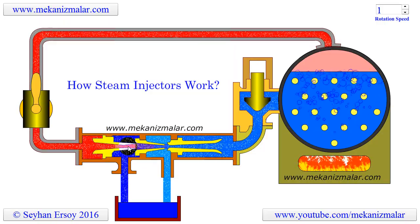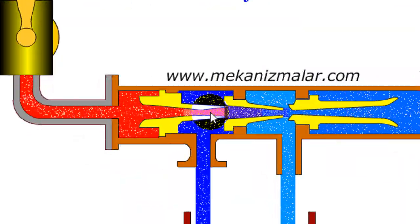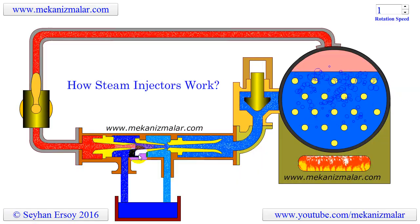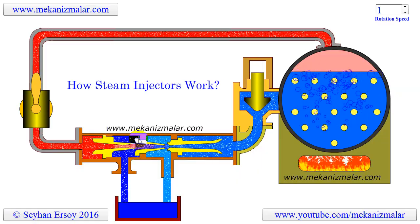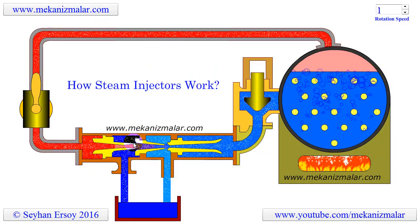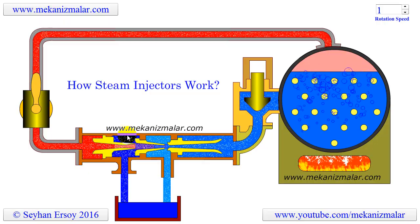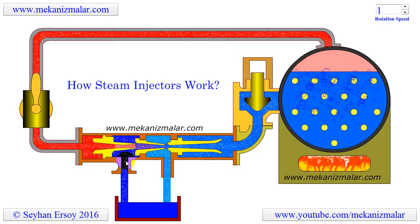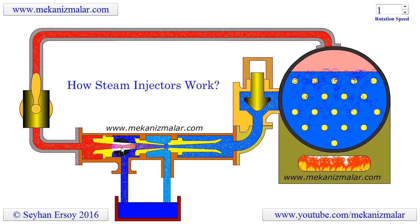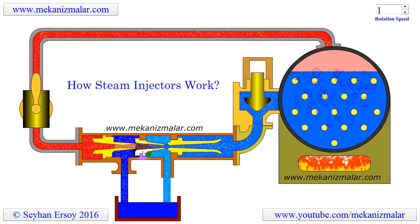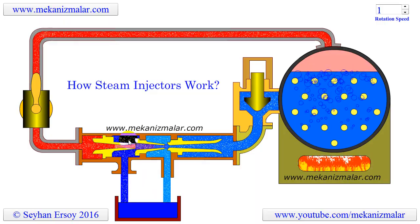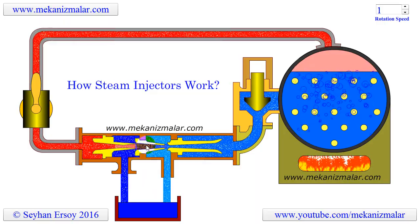The low pressure created at the exit of the steam cone causes the water in the reservoir to be sucked into the vacuum chamber. The steam leaving the steam cone with high velocity enters the combining cone, so called because the steam is also sucking large amounts of water from the reservoir.